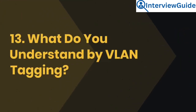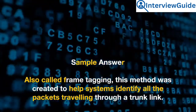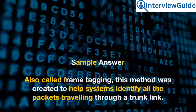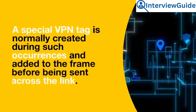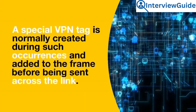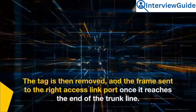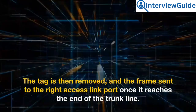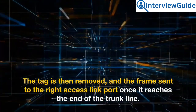Question 13: What do you understand by VLAN tagging? Also called frame tagging, this method was created to help systems identify all the packets traveling through a trunk link. A special VLAN tag is normally created during such occurrences and added to the frame before being sent across the link. The tag is then removed and the frame sent to the right access link port once it reaches the end of the trunk line.